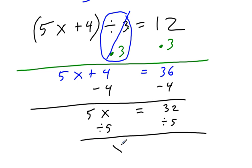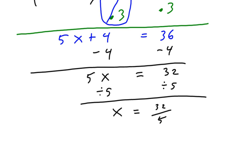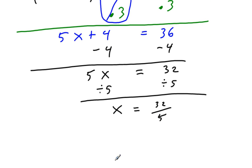I get x equals 32 over 5. Someone else might write x equals 6 and 2 fifths. And that is my final answer.